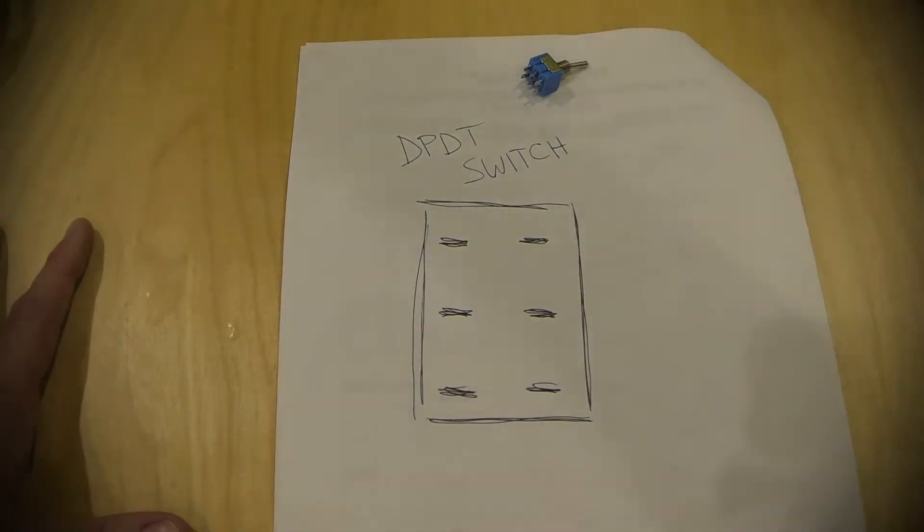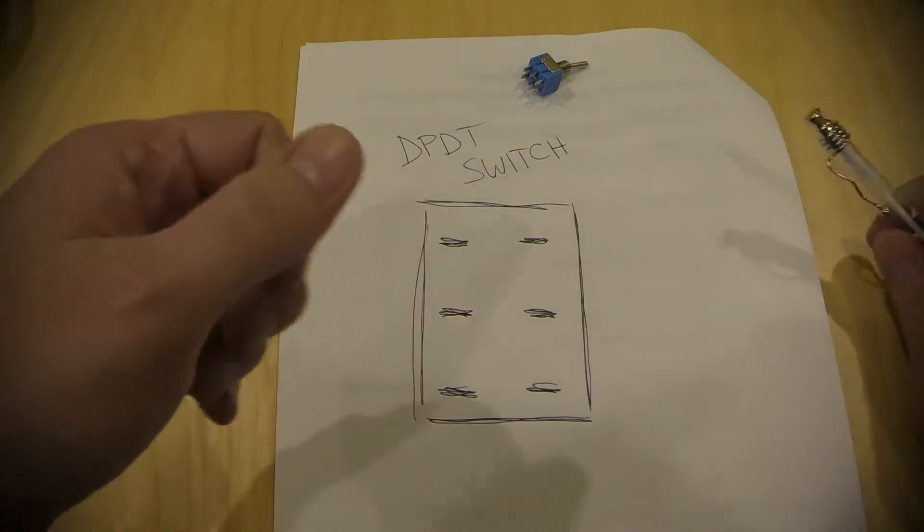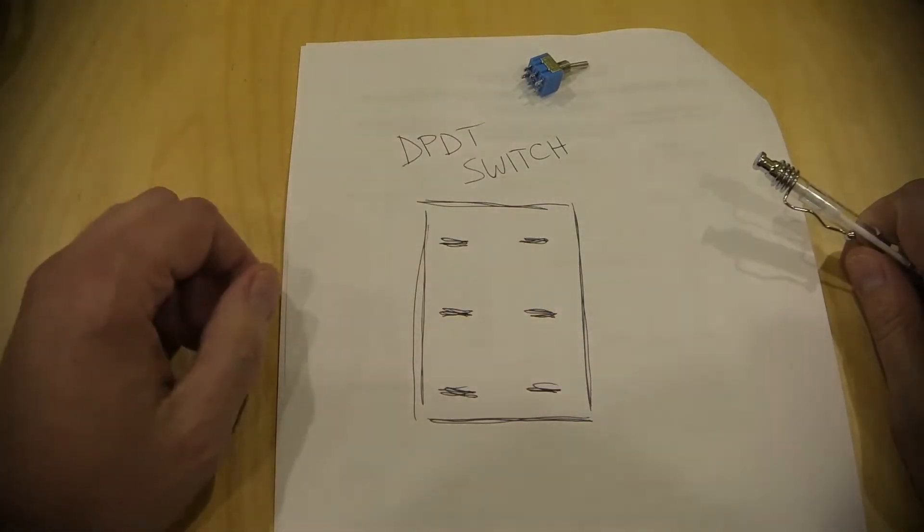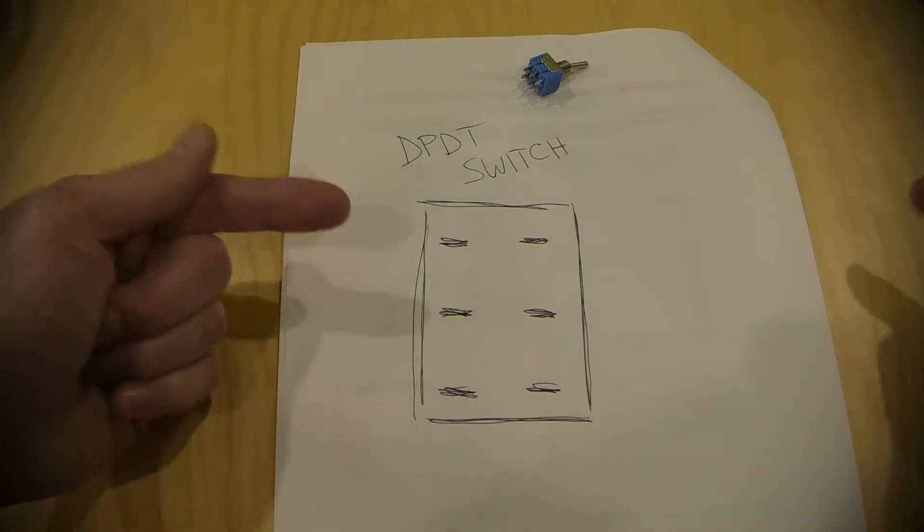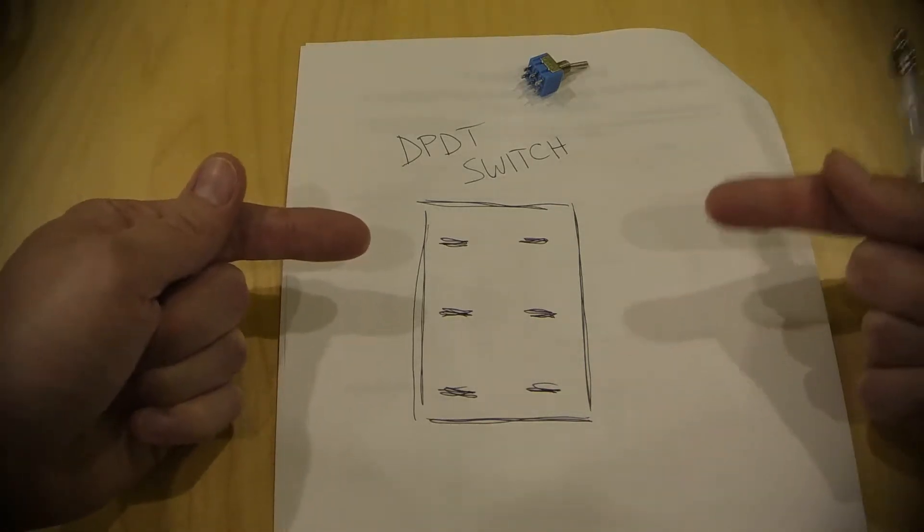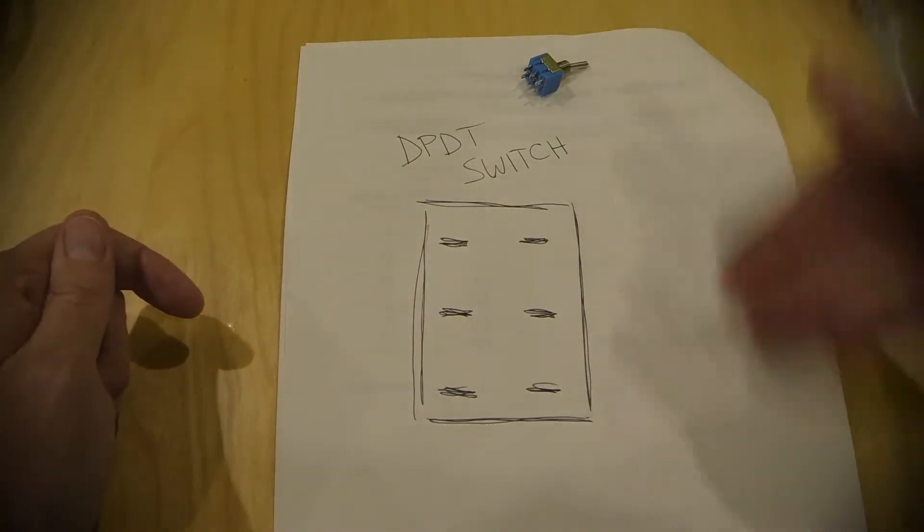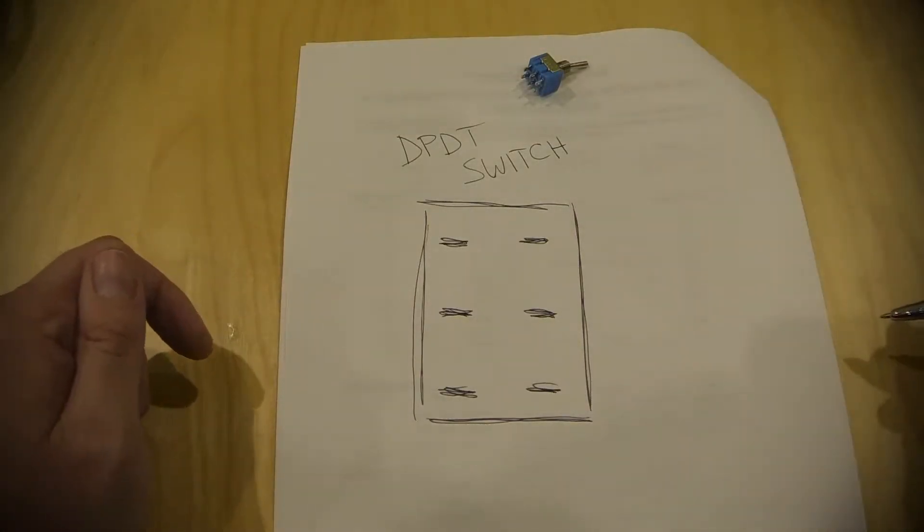Basically what you're doing with a phase switch is you are taking your start of your coil and the end of your coil in your pickup and you're reversing them, which basically reverses your waveform, your AC waveform that the pickup is generating.